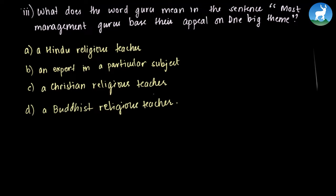The third question asks what 'guru' means in the sentence 'Most management gurus base their appeal on one big theme.' Options are: A) a Hindu religious teacher, B) an expert in a particular subject, C) a Christian religious teacher, or D) a Buddhist religious teacher. The sentence is not specifying any religion — it's saying most management teachers base their appeal on one big theme. So the correct answer is B: an expert in a particular subject.